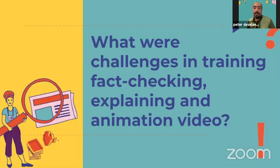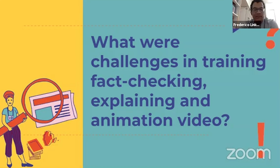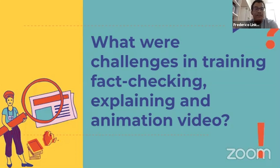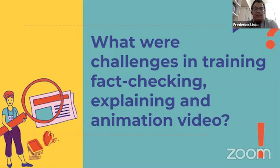On challenges in journalism education around explaining and fact-checking, a key issue everywhere — not just in Namibia or Africa — is numeracy in newsrooms. A lot of journalists struggle to interpret and work with numbers, statistics, and data, and more often than not they get things wrong. Data journalism has still not really taken off in newsrooms; you don't see many infographics or creative use of online graphic design tools.